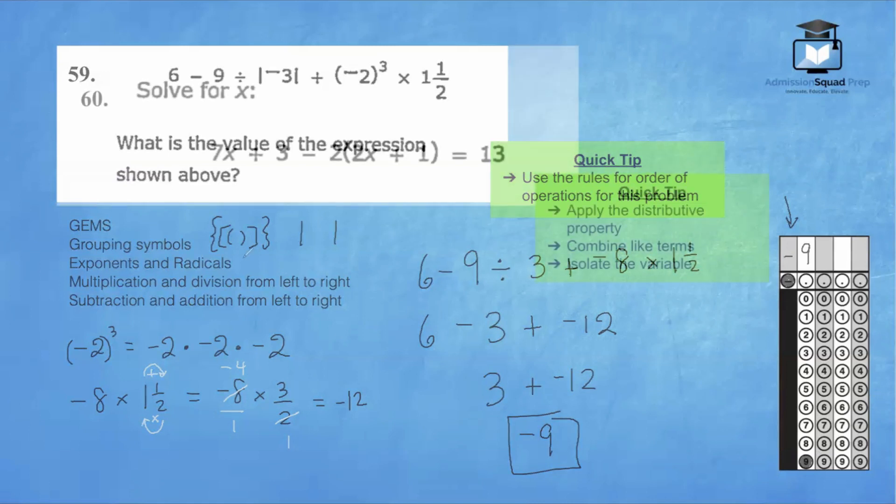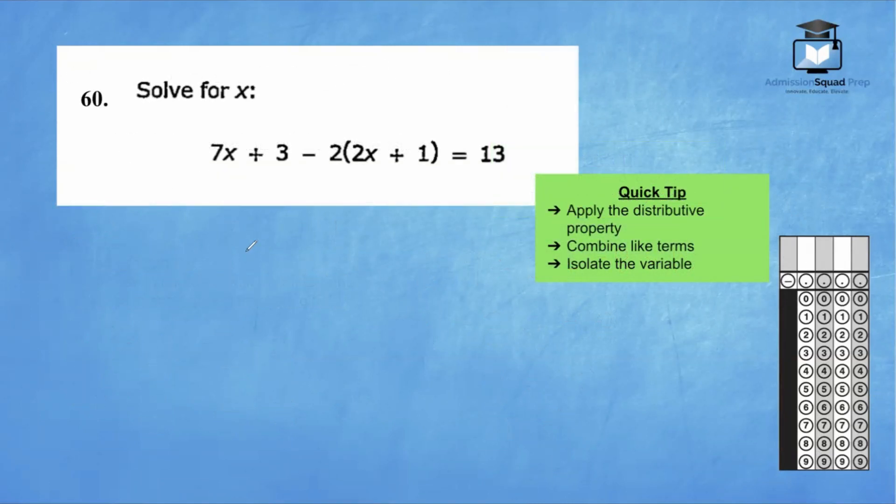Let's head over to question 60. For question 60, we are solving an equation for the variable x. The first step is always to perform the distributive property. If I see a number right on the outside and several terms in the parentheses, I'm going to distribute the number that's right on the outside. So let's give this a try. We'll bring down 7x plus 3 and we're distributing negative 2. So negative 2 times 2x is negative 4x and negative 2 times 1 is negative 2. We're going to set that equal to 13.